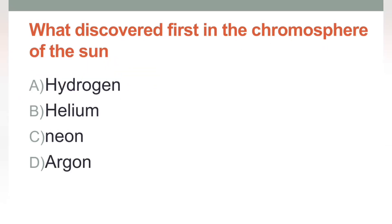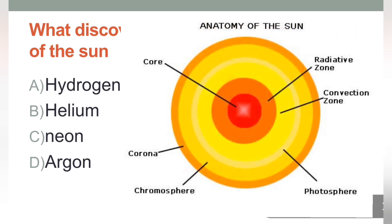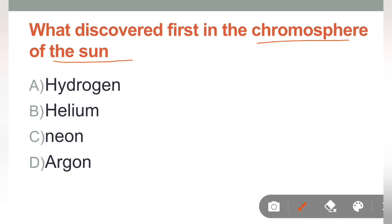Next question is: What discovered first in the chromosphere of the Earth? In mein se, kaunsi gas hai, jo ki chromosphere of the Earth, Earth ke jo layer hai, us mein discover ki gayi hai. Options aapko diye gaye hai: hydrogen, helium, neon and argon. Saare confusing questions hai, toh is question ko aap dhyan se, ekdam by heart learn kar leena. Iska correct answer hai Helium, option B is the correct answer.